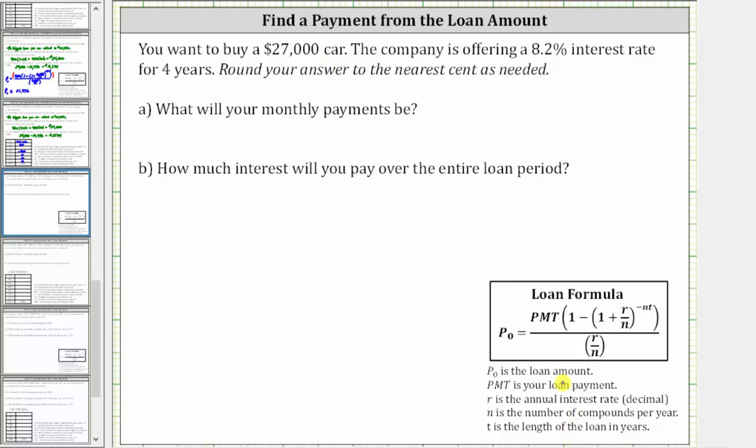Because you want to buy a $27,000 car, the loan amount, P₀, will be $27,000. So we have $27,000 equals, on the right side, we have this quotient where PMT is the monthly payment which we want to solve for. So we have PMT in the numerator, and then times the quantity one minus, in parentheses, we have one plus r divided by n, raised to the power of negative nt.